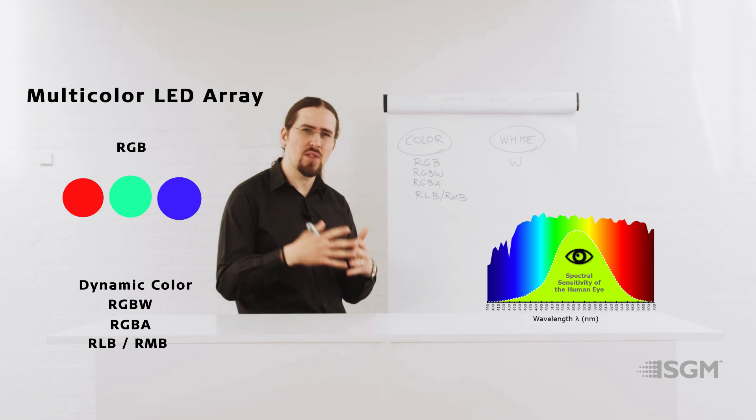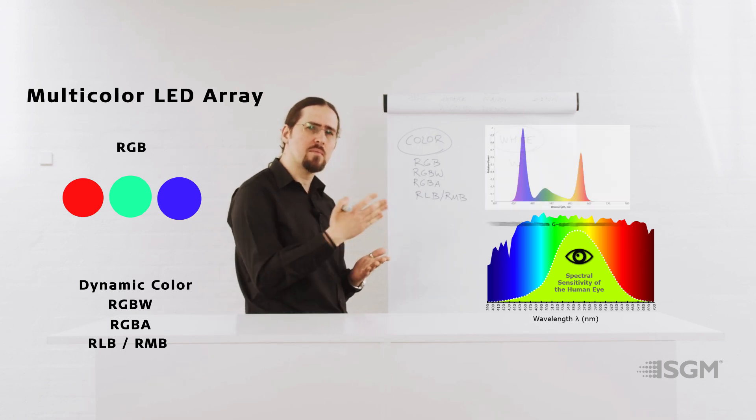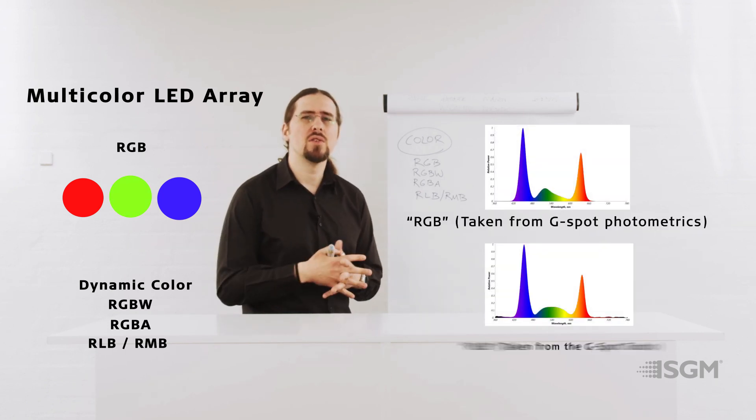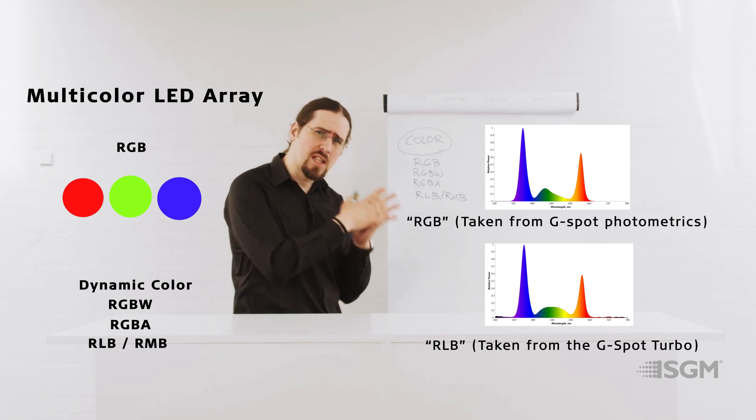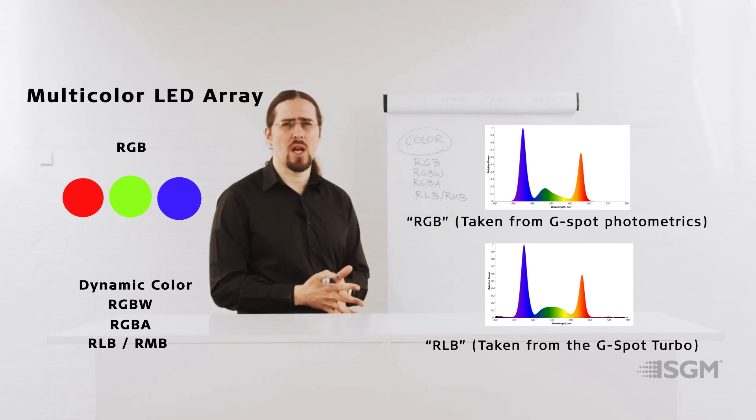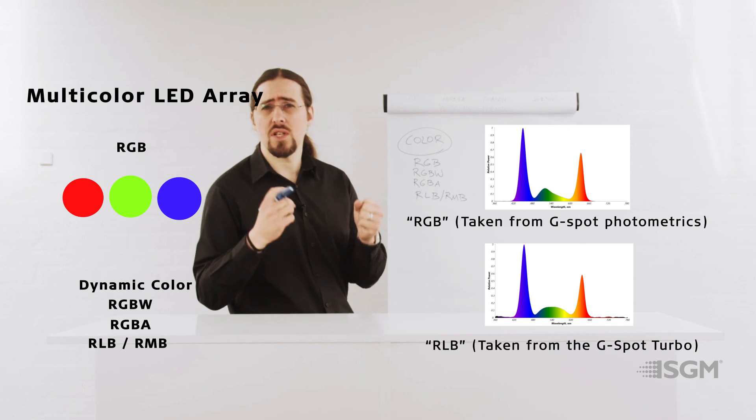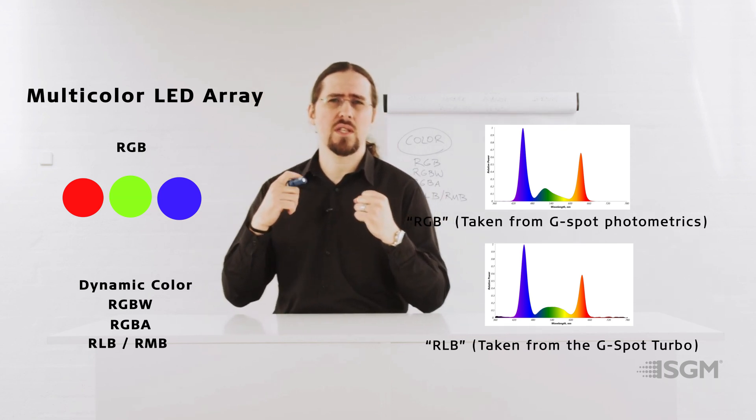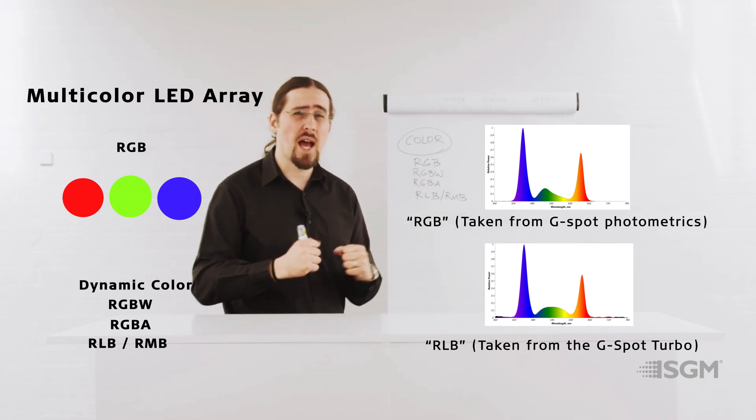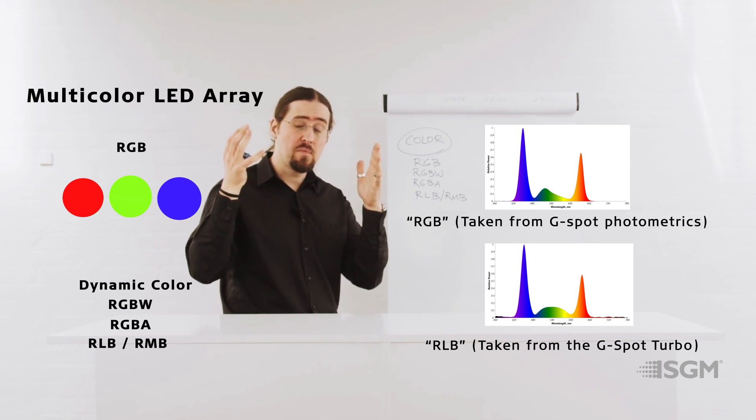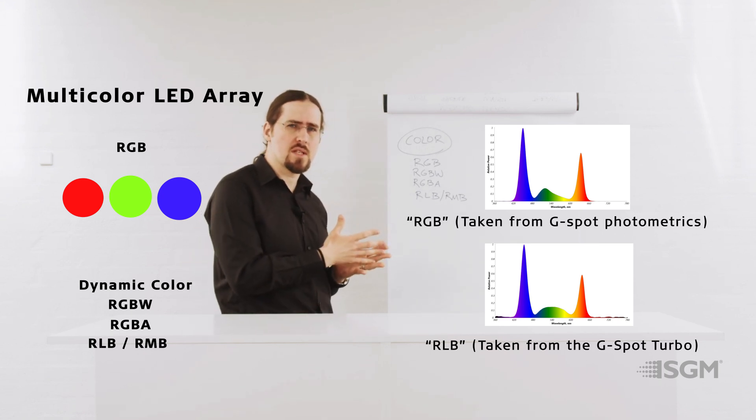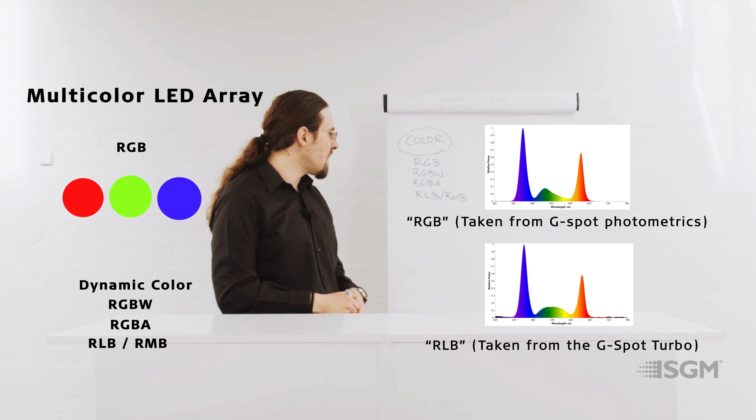And that's why it makes sense, normally when you have a red lime blue or red mint blue LED array, you get more output than an RGB array. But if you are interested in the contrast, if you are interested in the saturation, and have very primary pure colors, then RGB is still a better option.